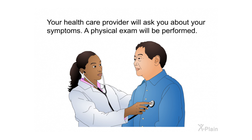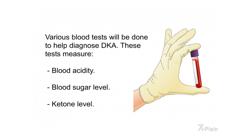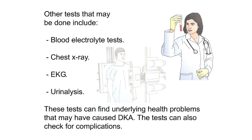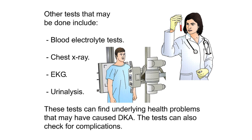Your health care provider will ask you about your symptoms and a physical exam will be performed. Various blood tests will be done to help diagnose DKA; these tests measure blood acidity, blood sugar level, and ketone level. Other tests that may be done include blood electrolyte tests, chest X-ray, EKG, and urinalysis. These tests can find underlying health problems that may have caused DKA and also check for complications.